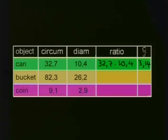Now, in the bucket, the circumference was 82.3 cm and it had a diameter of 26.2. The ratio can be written as 82.3 to 26.2 and C divided by D gives us 3.14 rounded off.